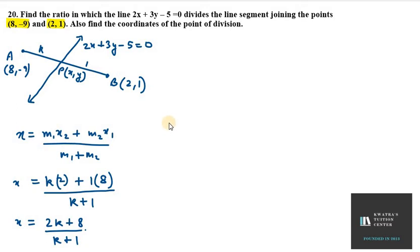Now for y, it's m1·y2 plus m2·y1 over m1 plus m2. m1 is k, y2 is 1.